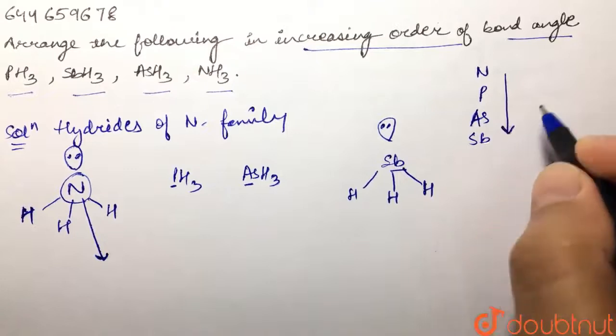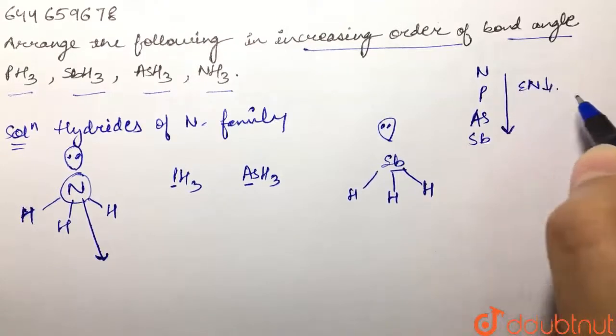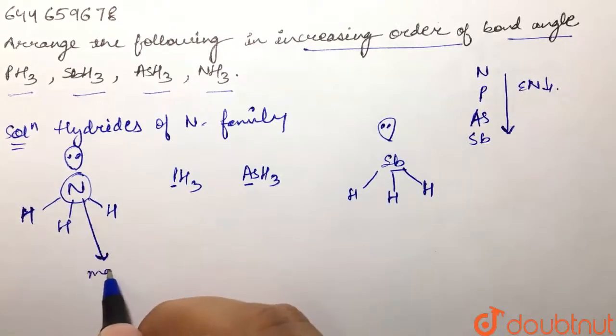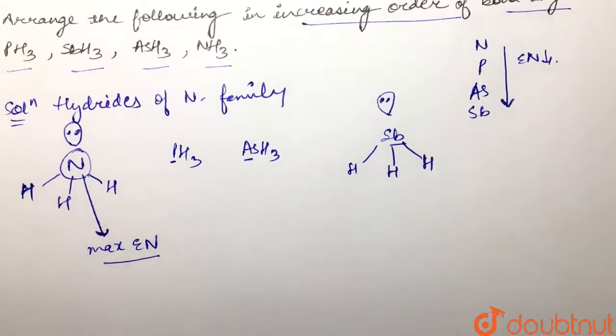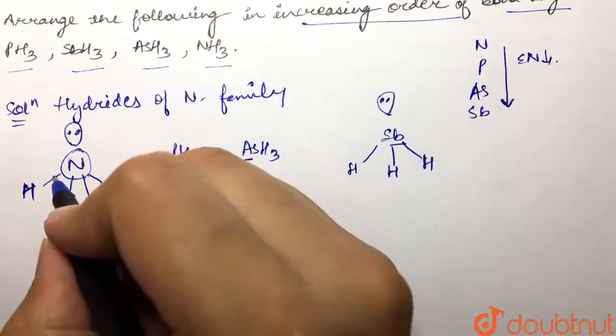As we move down the group, the electronegativity decreases. So we can say that nitrogen over here is maximum electronegative.